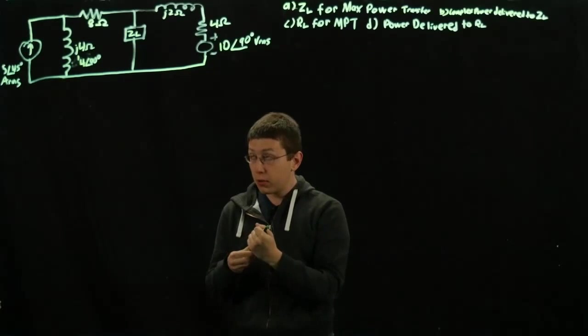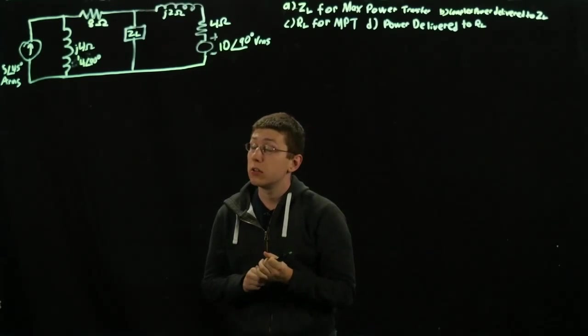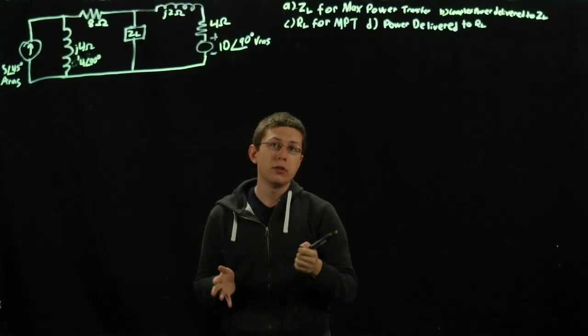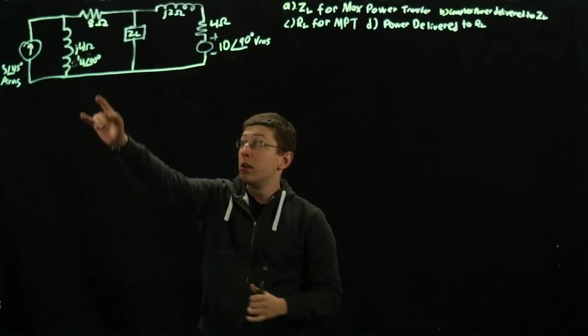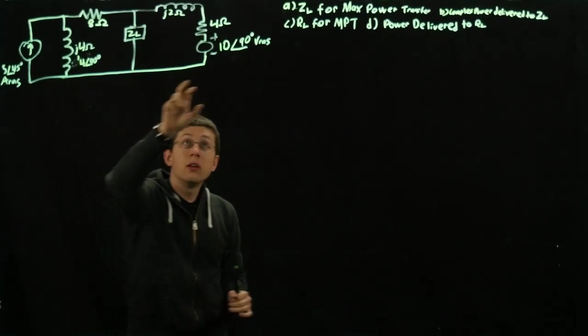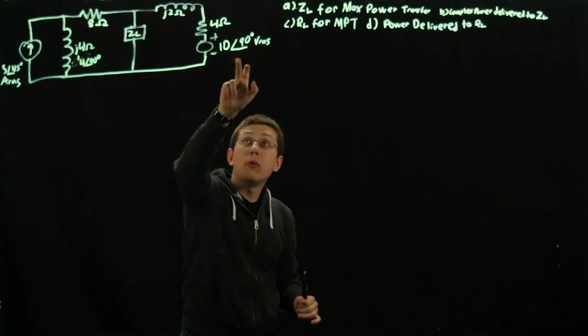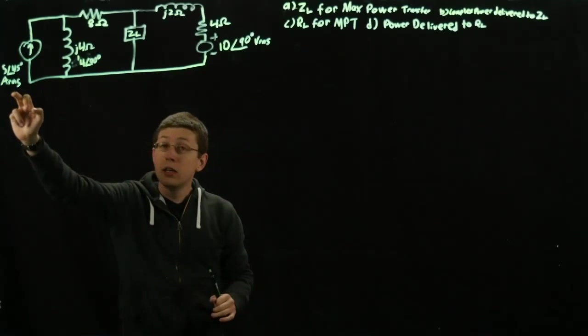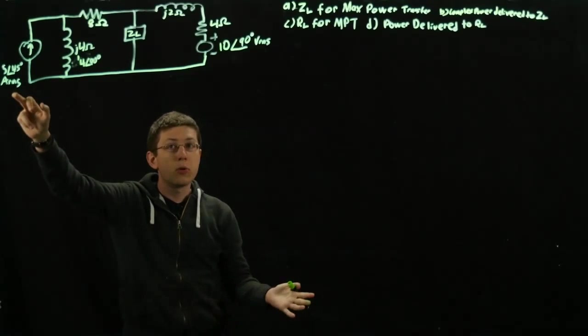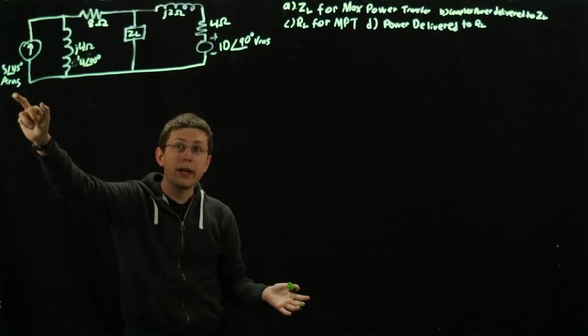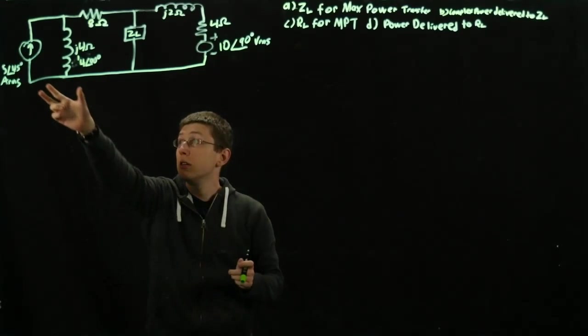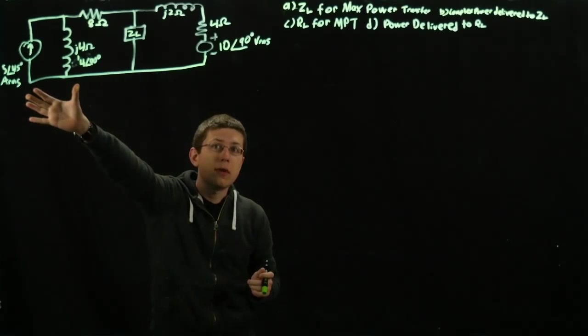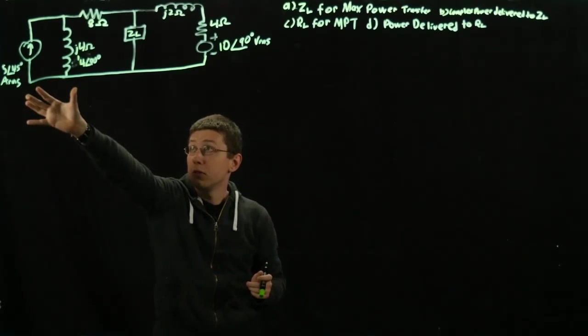To begin with, we're going to do a Thevenin equivalent using VOC and ISC as we've done before. First, we notice we have a voltage source and a current source. Since I'm doing nodal analysis, I want to have all one or the other. This section right here lends itself very well to being turned into a voltage source.